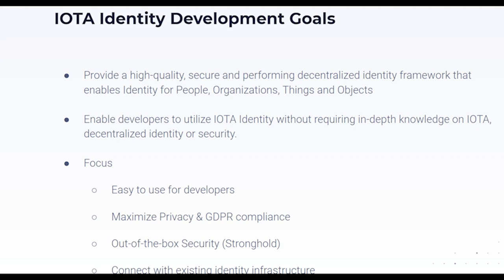We focus on delivering high quality code over meeting deadlines. We also really want to perform well — identities need to be usable for situations like access control where you scan your identity at a physical gate. Apparently people get annoyed if it takes more than 200 milliseconds, so that's a very good benchmark to hit: validating identities in under 200 milliseconds.